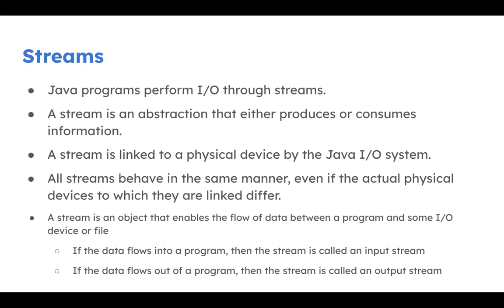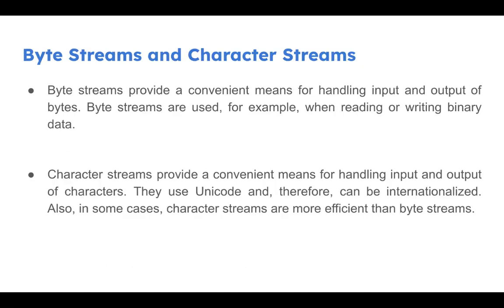That solves a lot of problems for a programmer. Streams are objects and they primarily help us handle inputs and outputs. When working with streams in Java, there are two ways they are handled: either through bytes or through characters. Bytes are the general way used for reading and writing in binary format, primarily because they are traditionally more efficient. In the character form, reading and writing makes the application more internationalized — they can be transported to any platform because they generally use the Unicode format.